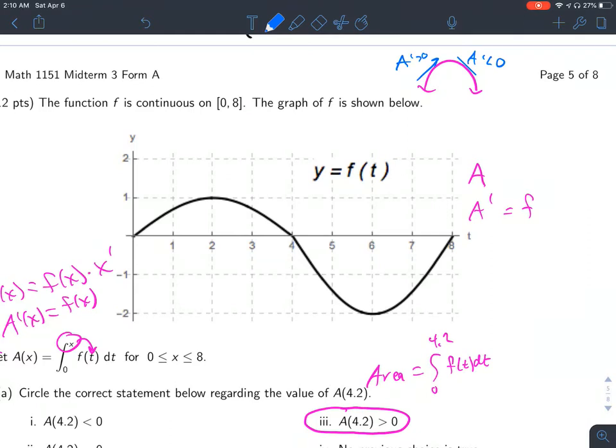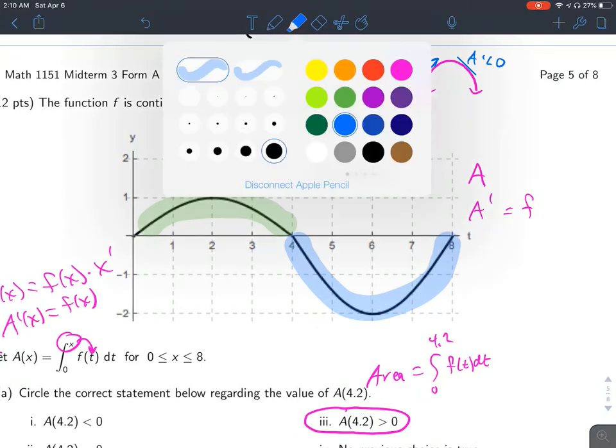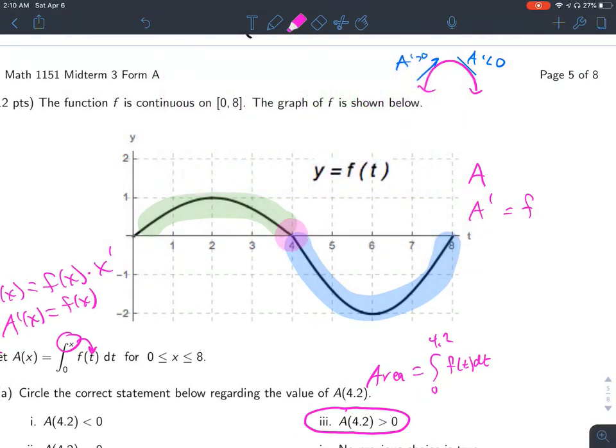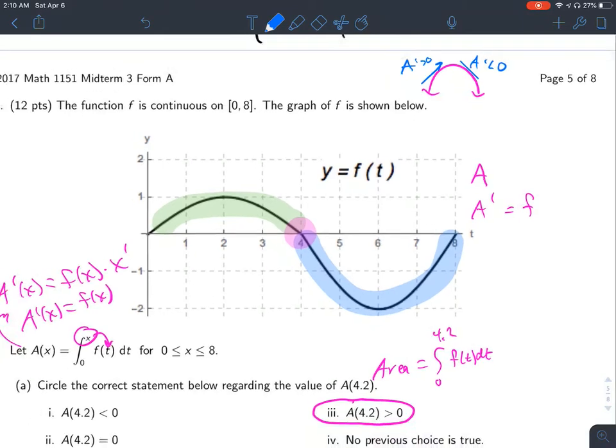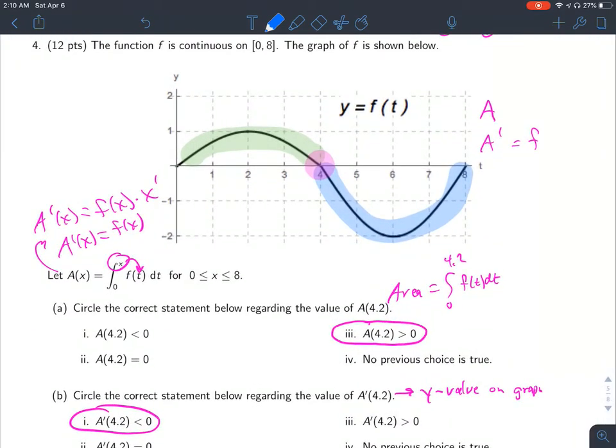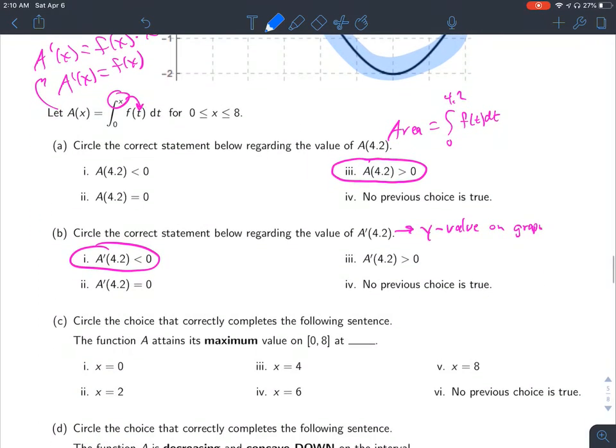So since f is the derivative, it is positive all through here and negative all through here. When does it change from being positive to negative? Changes right here at 4. Which means the original graph, not f but A, has to have a maximum at 4.